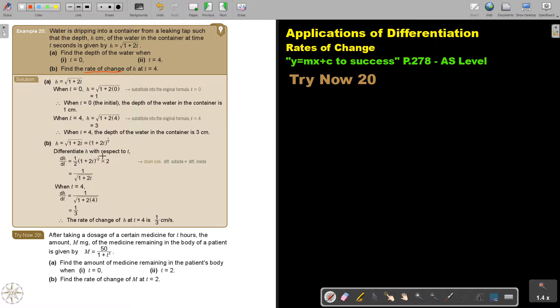So differentiate h with respect to t. Just remember, I'm following the short way of the chain rule. And then after that, when t is 4, I substitute in the derivative function. I substitute 4 and I get one-third. So the rate of change of h at t equals 4 is one-third centimeter per second.